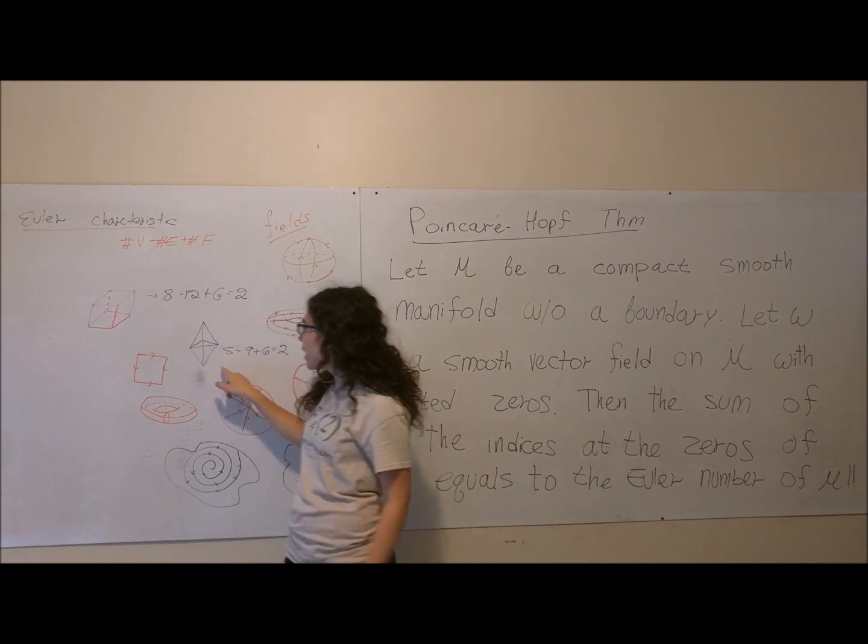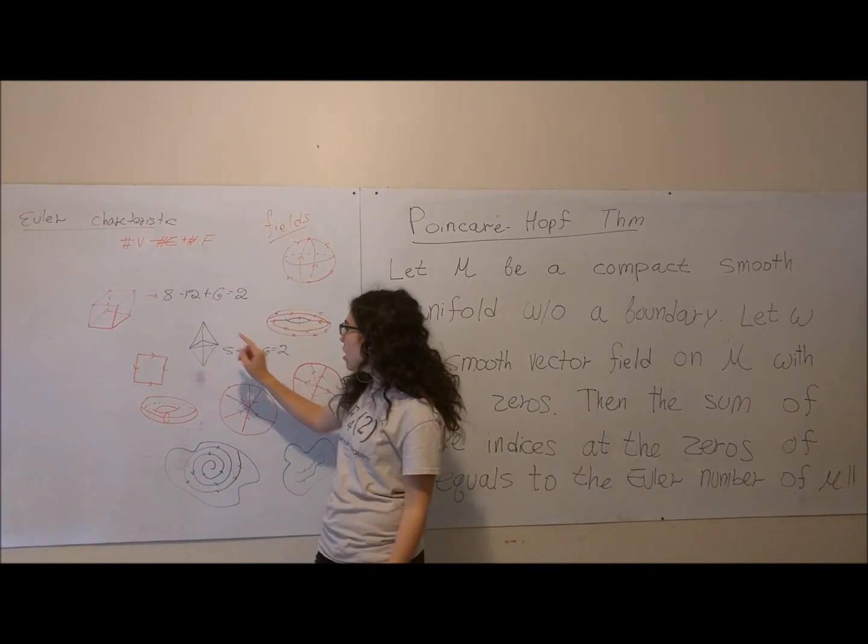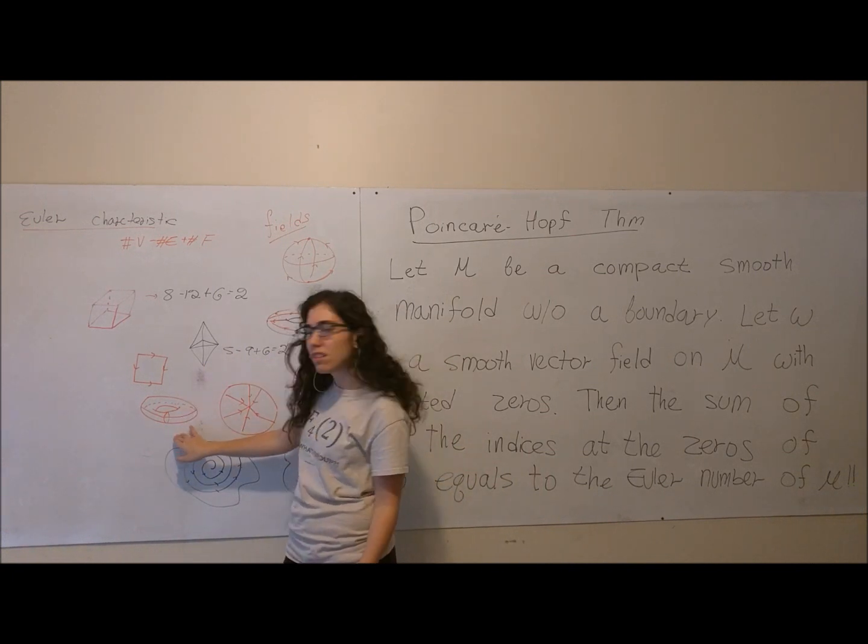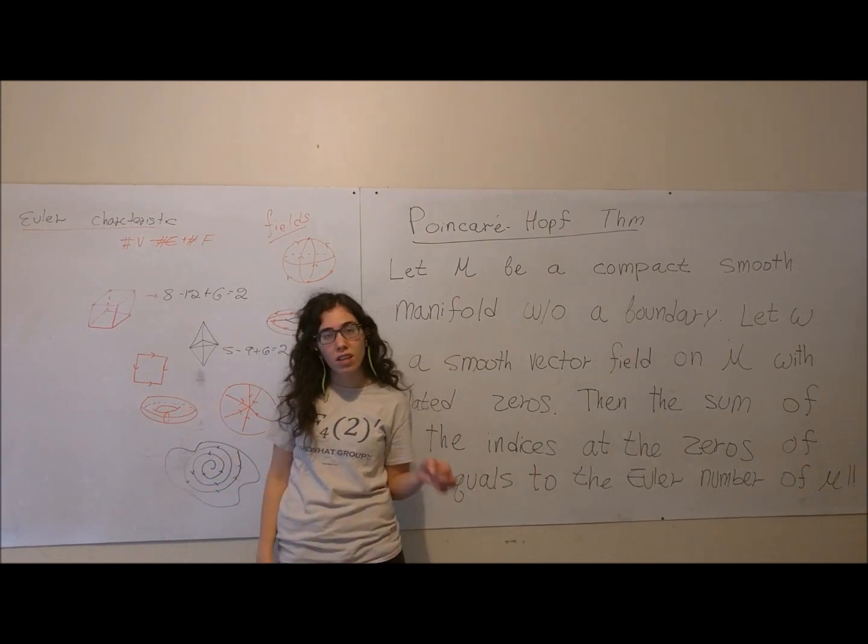In the case of the cube, in the case of this diamond-shaped figure, the Euler characteristic is 2. For example, in the case of a torus, the Euler characteristic is 0.